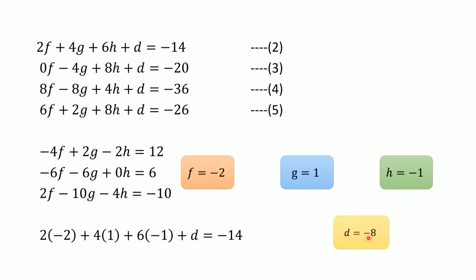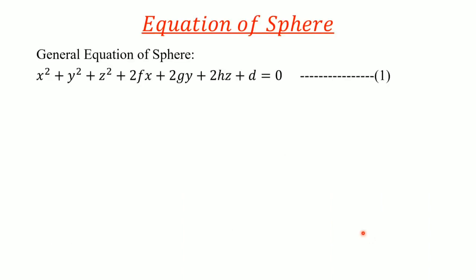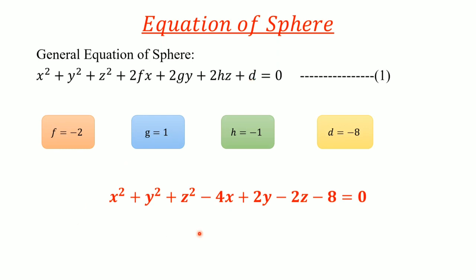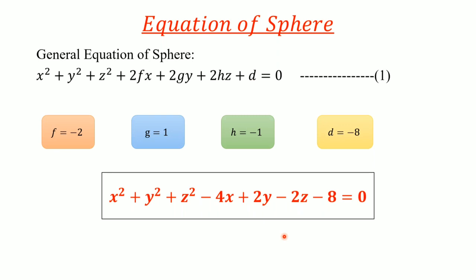So we now have all the unknowns. The equation of the sphere in general form is x² + y² + z² + 2fx + 2gy + 2hz + d = 0. Substituting f = −2, g = 1, h = −1, d = −8, we get the required equation of the sphere. These two methods can both be used to find the equation of a sphere when four points on its surface are known.